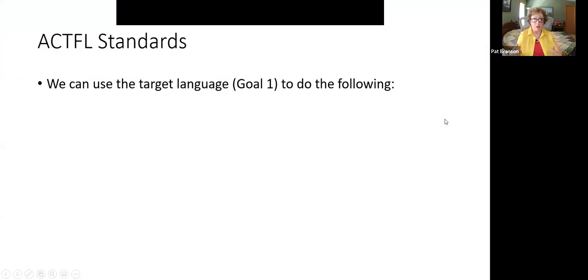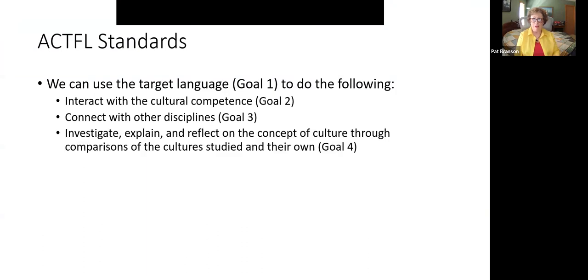Talking about the actual standards: goal one is using the target language, which we can use to achieve goals two, three, and four. Goal three is connecting with other disciplines — with history, so students in high school are also learning history. And cultural competence: talking about German history, the culture that goes along with it, and sometimes comparing our own culture with German culture.